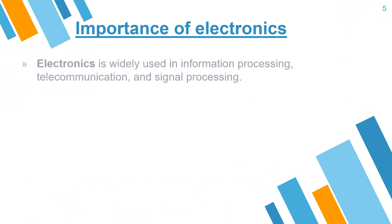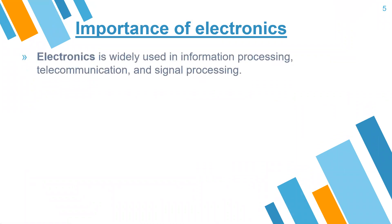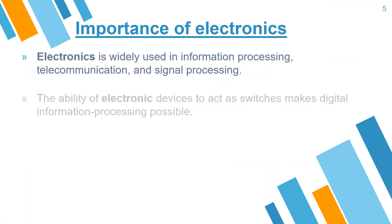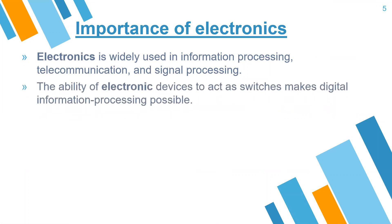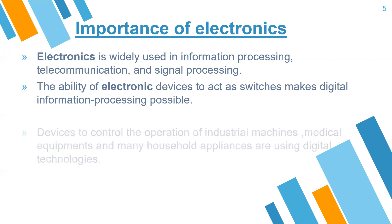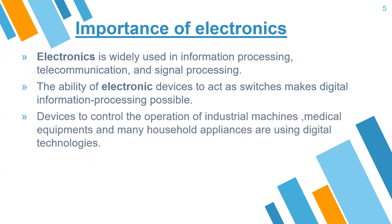What are the importance of electronics? Electronics is widely used in information processing, telecommunication, and signal processing. The ability of electronic devices to act as switches makes digital information processing possible. Devices to control the operation of industrial machines, medical equipment, and many household appliances are using digital technologies.